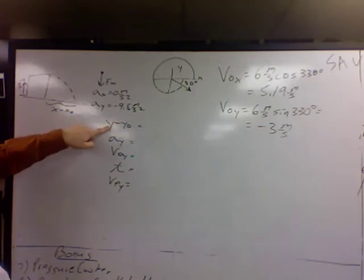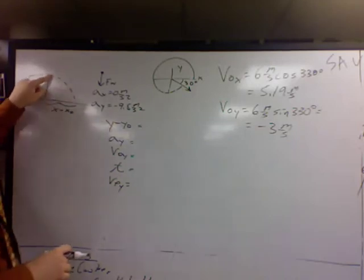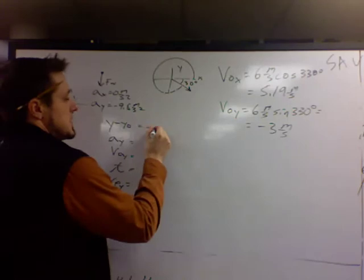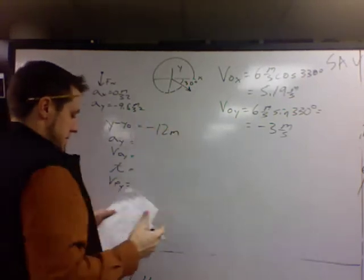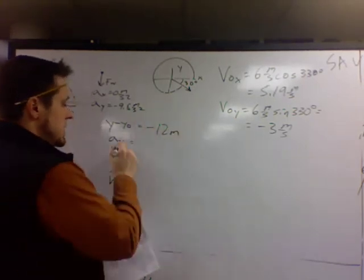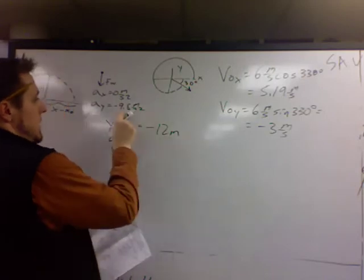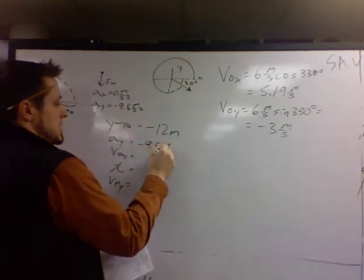For displacement, which is a vector, you start here and you go down 12 meters. So this is a negative 12 meters. Acceleration in the y, we have it right here, negative 9.8 meters per second squared.